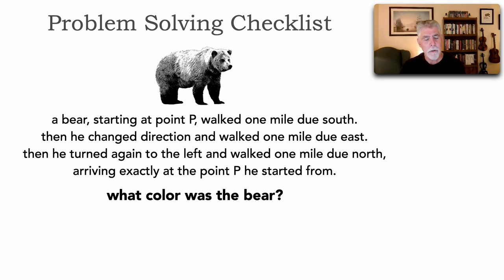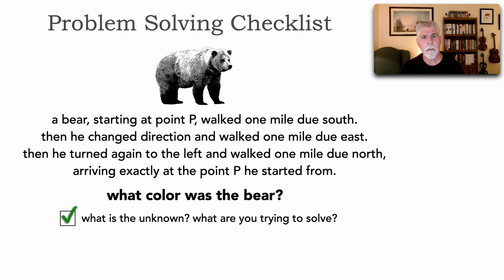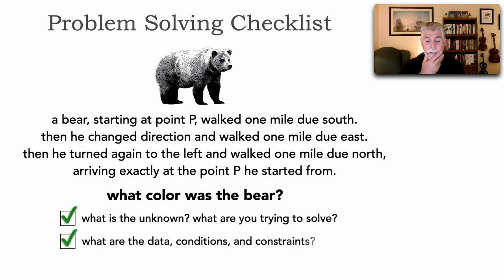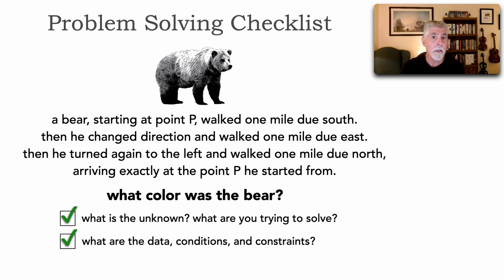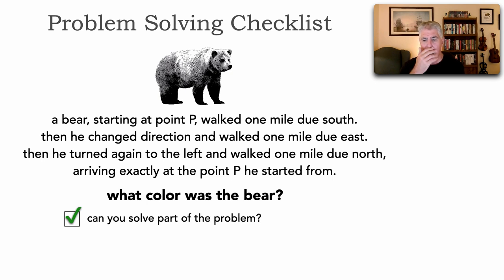Let's go through it together using the checklist. What is the unknown? The unknown is the color of the bear — that's what we're trying to solve. What are the data, conditions, and constraints? The only data we have are a bunch of directions and the fact that the bear was moving. Is there any connection between the data and the unknown? It doesn't look like there's much, but let's continue. Can we solve part of the problem? Maybe if we use these geographical coordinates and start from there, we'll come up with something.